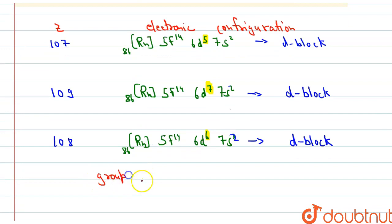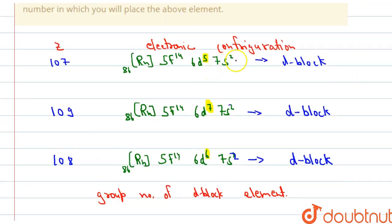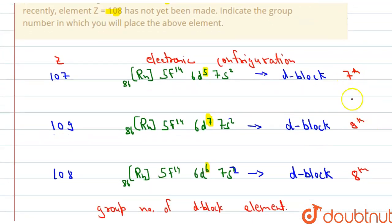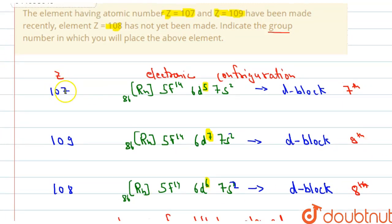To find the group number of a d-block element, we count the number of electrons in the last d and s orbitals. For Z=107: d has 5 and s has 2, total = 7, so it is a 7th group element. For Z=109: d has 7 and s has 2, total = 9, so it is a 9th group element. For Z=108: d has 6 and s has 2, total = 8, so it is an 8th group element.